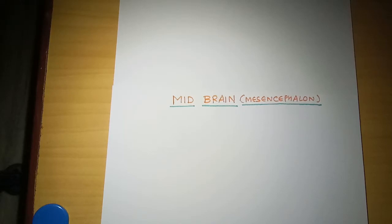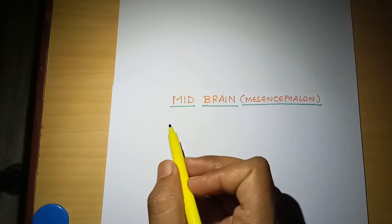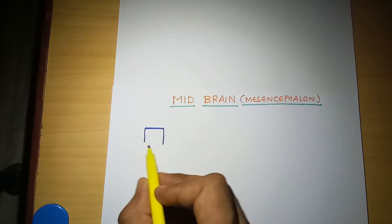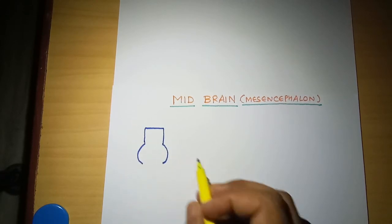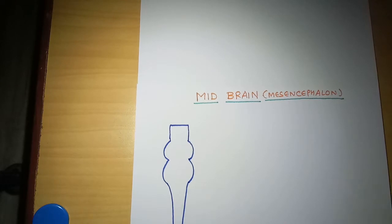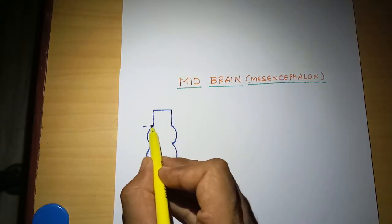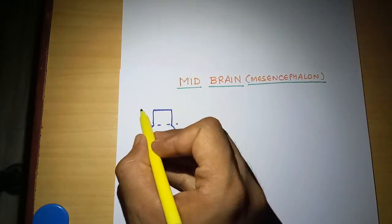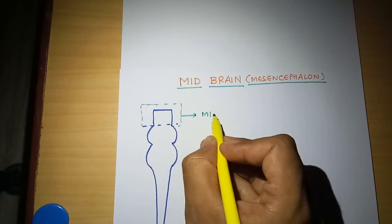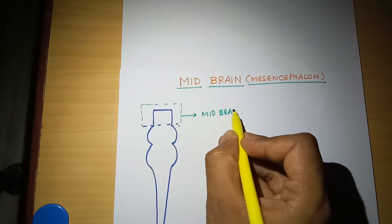My friends, myself Siddhar Chauhan. Welcome to EasyMedicam. Today we will study about the midbrain, or mesencephalon. It is a further continuation of the brainstem. The brainstem consists of midbrain, pons varoli, and medulla oblongata. Below the medulla oblongata is the spinal cord. Today our lecture topic is to study this portion of the brain — the midbrain or mesencephalon.